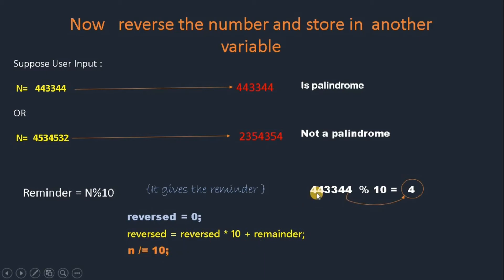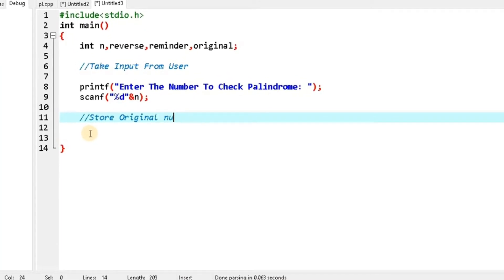If we do n = n / 10, then 443344 becomes 44334. The last 4 is removed, and the value becomes 44334. We repeat this loop in every iteration. Back to the program, you can see...